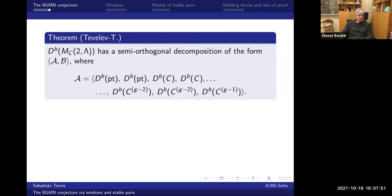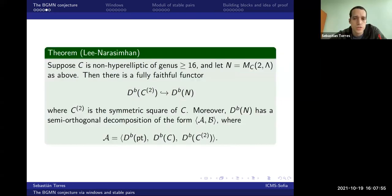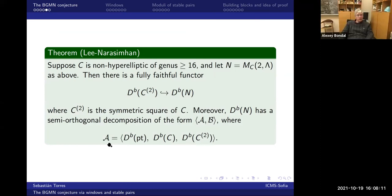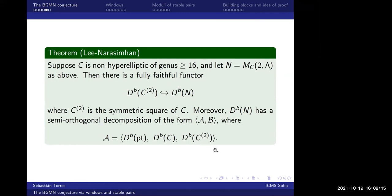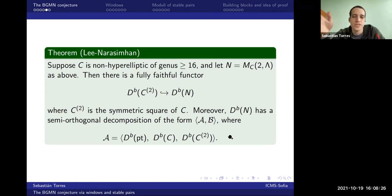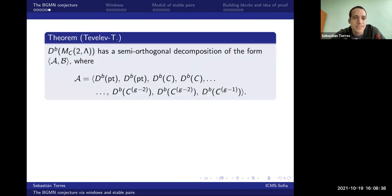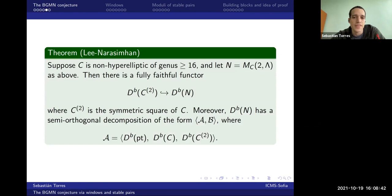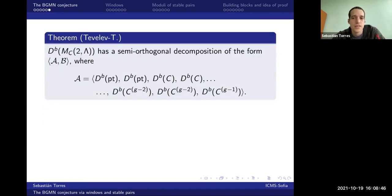Question from audience: Doesn't it contradict the last example on the previous slide? Reply: No, here I also don't know if there's a semi-orthogonal complement — here I know for a fact that there is a semi-orthogonal complement. This is only A. These are different A and B. In this B you have more components from the conjecture. I'm using A to denote the blocks we do know, and B is whatever's left. That B is the one we expect to be zero; the other one is not.